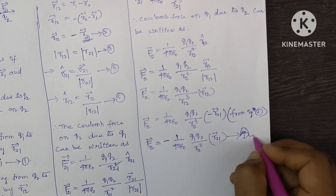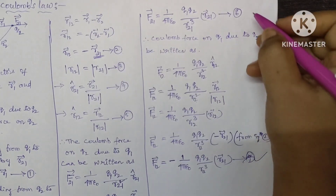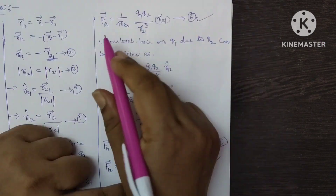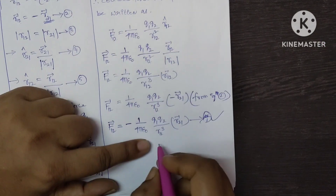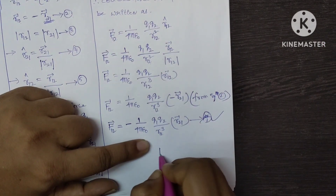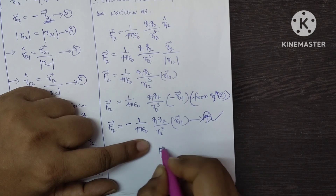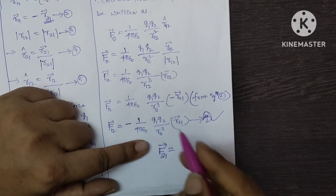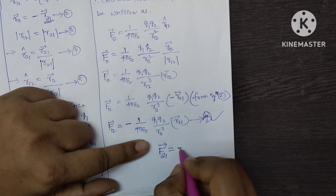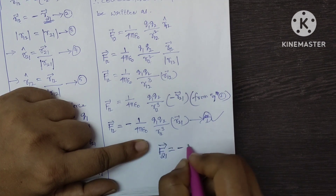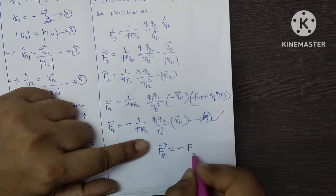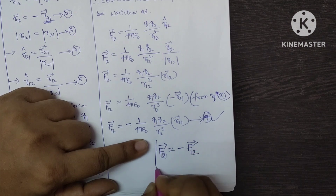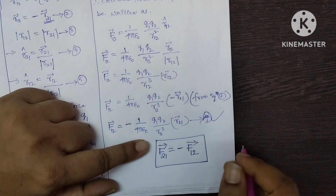So from equations 6 and 7, it is clear that F21 bar is equal to minus of F12 bar. I hope it is clear to you.